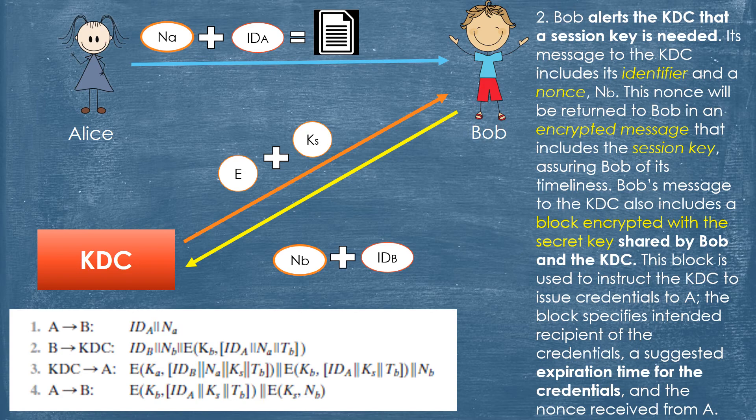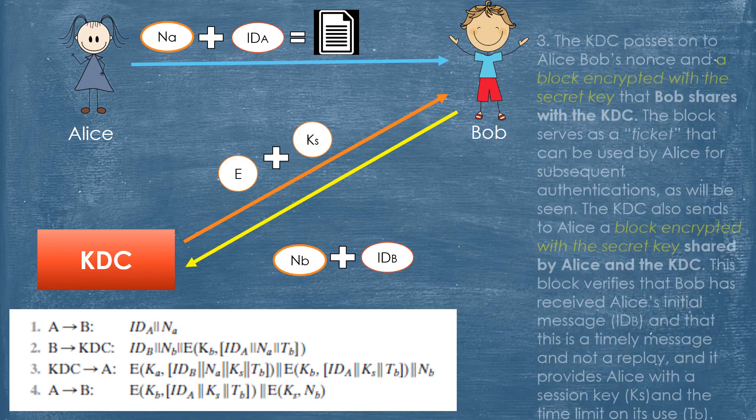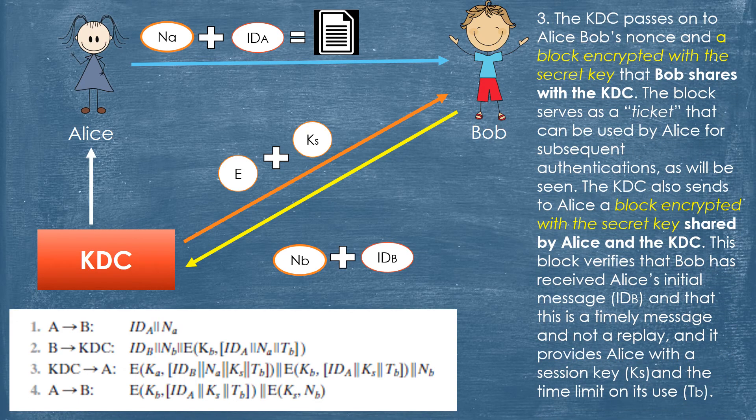Bob's message to the KDC also includes a block encrypted with the secret key shared by Bob and the KDC. This block instructs the KDC to issue credentials to Alice. The block specifies the intended recipient of the credentials, a suggested expiration time for the credentials, and the nonce received from Alice. Step 3: The KDC passes on to Alice Bob's nonce and a block encrypted with the secret key that Bob shares with the KDC.